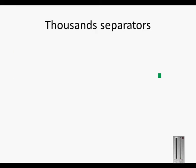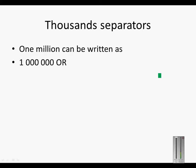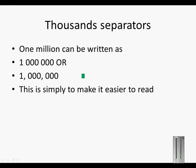Thousand separators. One million can either be written in bundles of three digits, with a comma between the bundles of three. This is simply to make it easier to read.